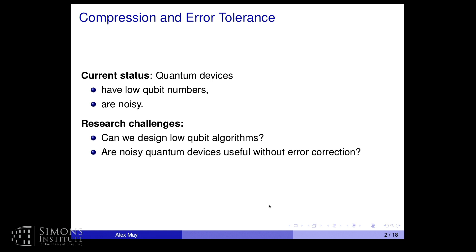The first part is about low-qubit algorithms, so errors are completely ignored. For the second part, he will deal with errors and set aside the compression from the first part — but not completely.